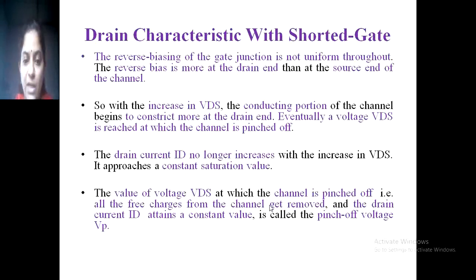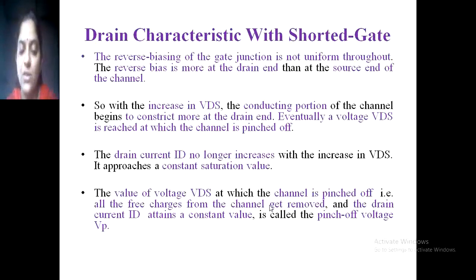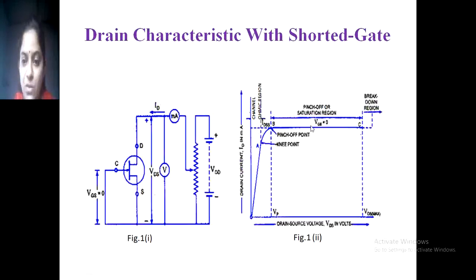With further increase in VDS, the drain current approaches a constant saturation value. The value of VDS at which the channel is pinched off — that is, all free charges from the channel are removed — and the drain current ID attains a constant value, is called the pinch-off voltage VP. In the graph, this is the saturation region where VGS is zero, ID is at the maximum level, and increasing VDS produces no change in ID.